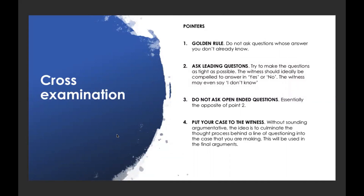Once you reach the culmination of a line of questioning and achieve your objective, you put your case to the witness — saying 'I put it to you that based on what you have answered, there has been a breach of contract by the respondent.' This is something you can then use in final arguments.